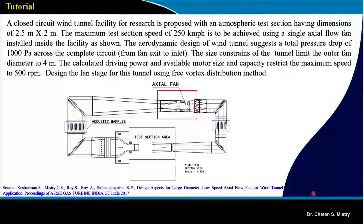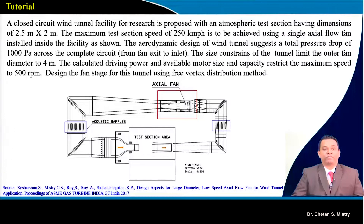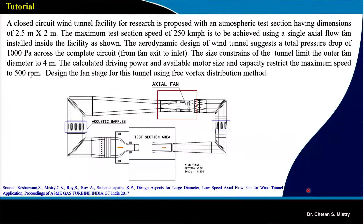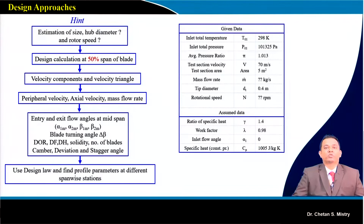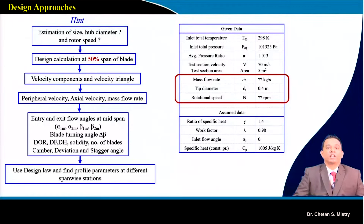We have the details available in terms of the test section and the maximum diameter of the fan required. We also have a constraint with the motor rating that is available to us. In this case we have unknown parameters like mass flow rate, a constraint on the casing diameter, and we do not know the hub diameter or the axial velocity.